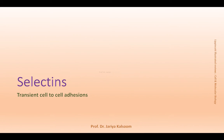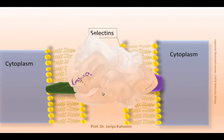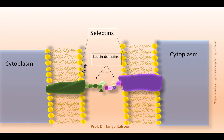Selectins are a type of cell adhesion molecule that form temporary cell-to-cell adhesion. They contain a carbohydrate domain called lectin on the extracellular side. The lectin-containing domain of selectin on one cell interacts with the lectin-containing domain of another cell. Such interactions are important in immune responses and cell migration towards the site of inflammation.